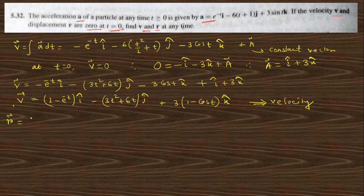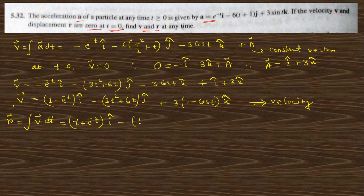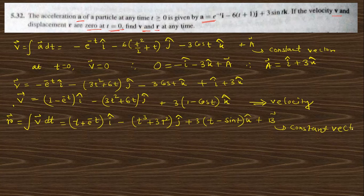Now, what is the position vector? The position vector is the integration of v dt. So if you integrate with respect to t, you will get (e^(−t) − t) i-cap, and integration of (3t² + 6t) gives t³ + 3t² j-cap, and 3t − sin(t) k-cap, with some another constant vector — also a constant vector.